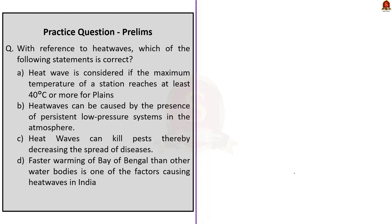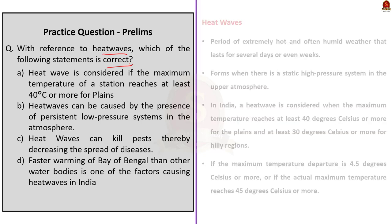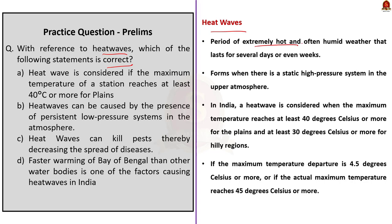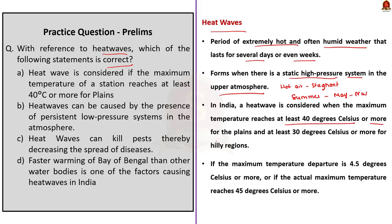Our next question is about heat waves, asking for the correct statement. A heat wave is a period of extremely hot and often humid weather that lasts for several days or even weeks. Heat waves form when there is a static high pressure system in the upper atmosphere over a region, causing hot air to become stagnant and trapping more heat. This high pressure prevents heat from rising and keeps out cooling convection currents. Heat waves usually occur during summer, between May and November in the Northern Hemisphere. In India, a heat wave is considered when the maximum temperature reaches at least 40°C for plains and at least 30°C for hilly regions.